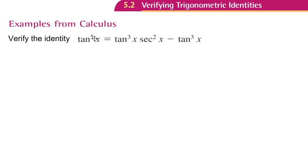So tangent to the power of 5. The common trick here for doing these is normally you're going to use one of your Pythagorean identities, so let's break this up so that we can use one of our Pythagorean identities.